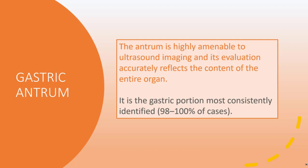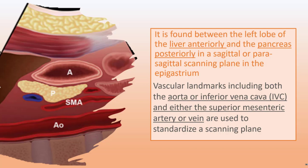Where do we see it? The antrum is found between the liver and the pancreas, and there are very good vascular landmarks — the aorta and inferior vena cava — that can be used to standardize our scanning plane.